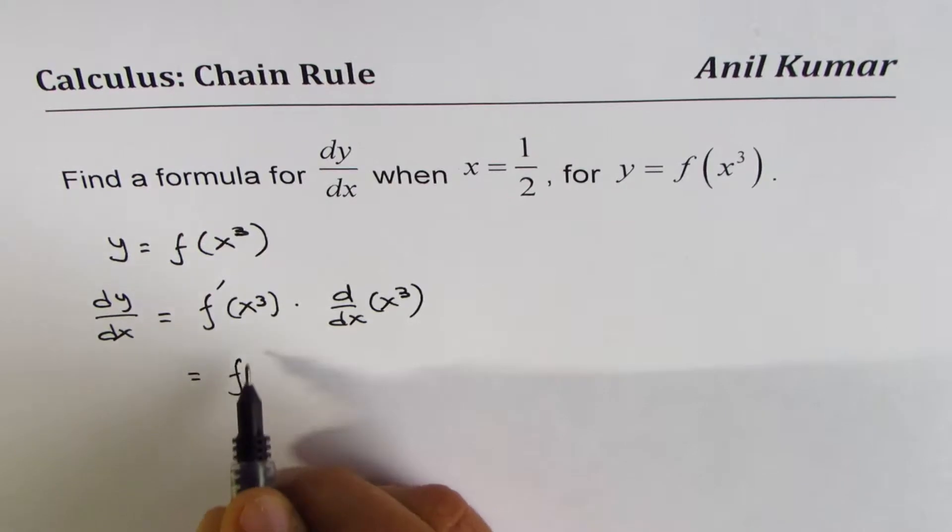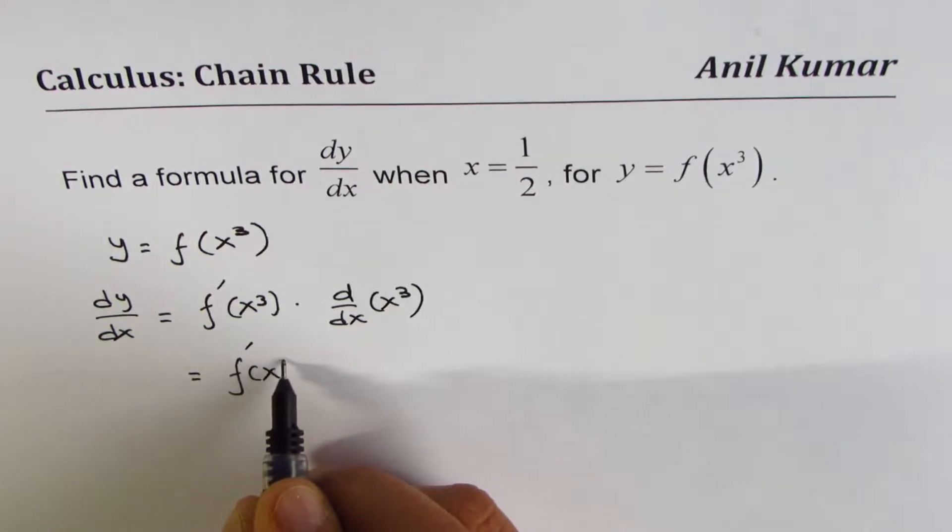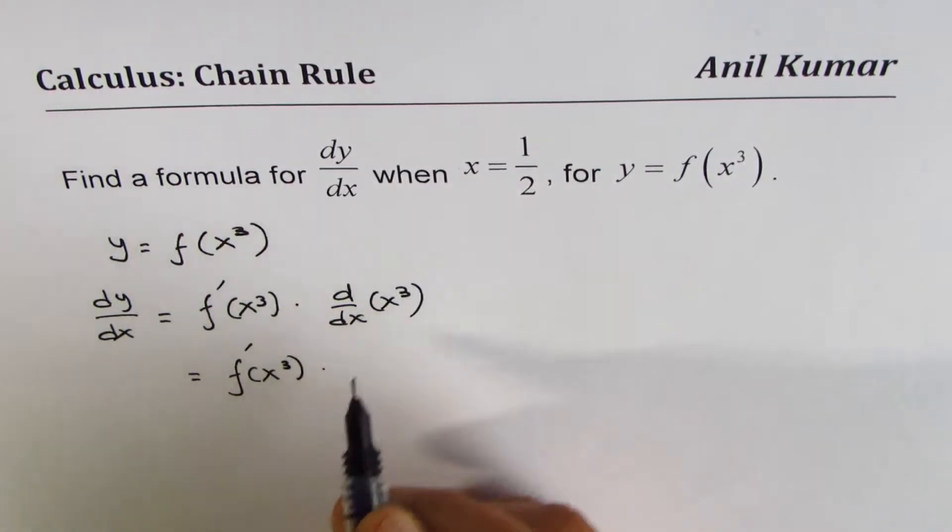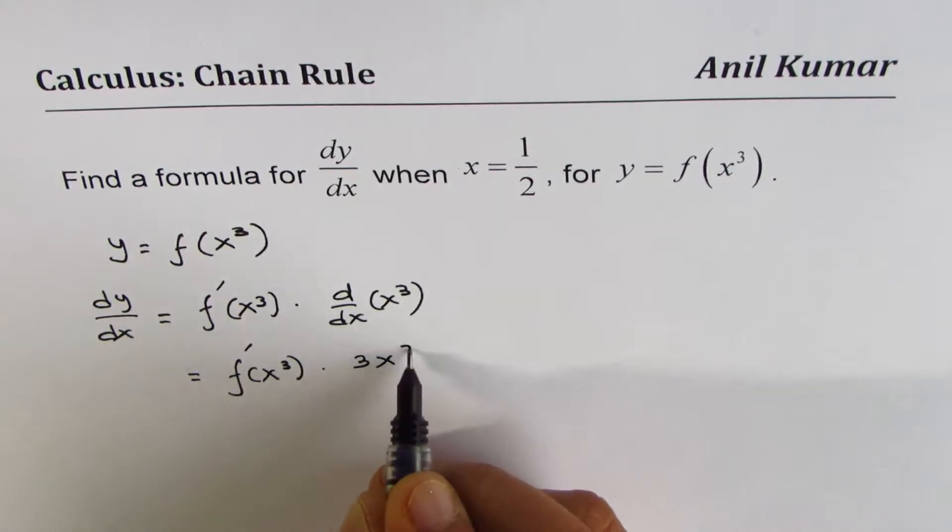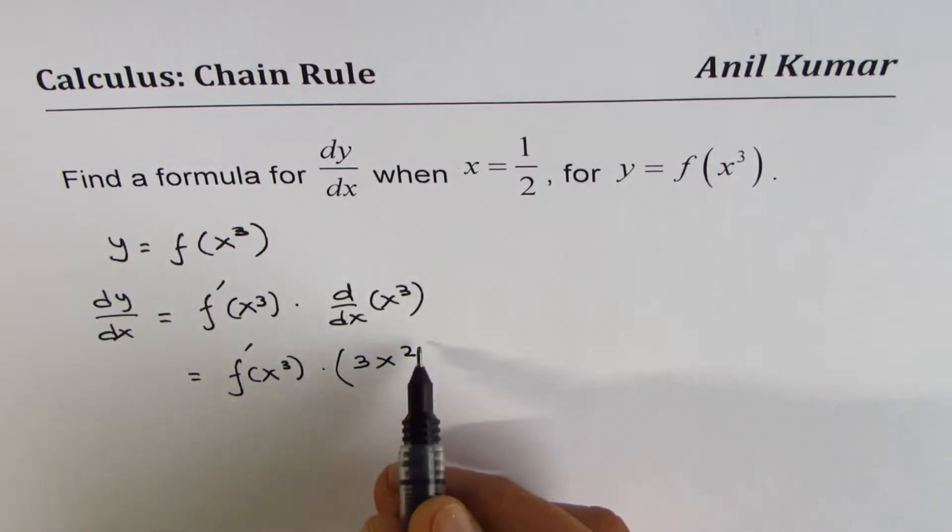That gives us the derivative of the function at x³ times the derivative of x³, which is 3x².